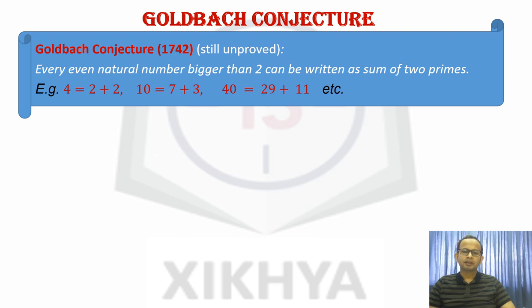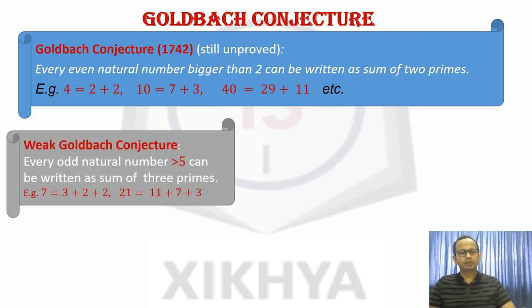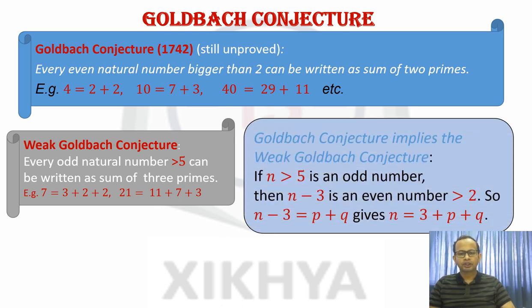Although this was framed in 1742, but this still remains unsolved. So what do mathematicians do in such a situation? They try to formulate something which is weaker than the original conjecture and they try to prove that. In such case, this is weak Goldbach conjecture. What is that? That every odd natural number bigger than 5 can be written as sum of 3 primes. For example, 7, we can see it as 3 plus 2 plus 2. 21, we can write it as 11 plus 7 plus 3. And we should be able to prove it for any odd natural number bigger than 5. Why is it called weak Goldbach conjecture? Because the original conjecture will imply this one, which is quite obvious to see.